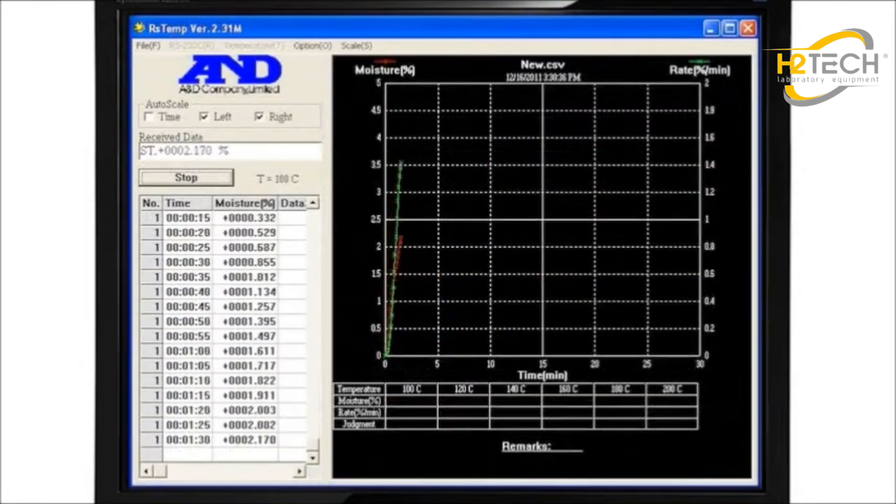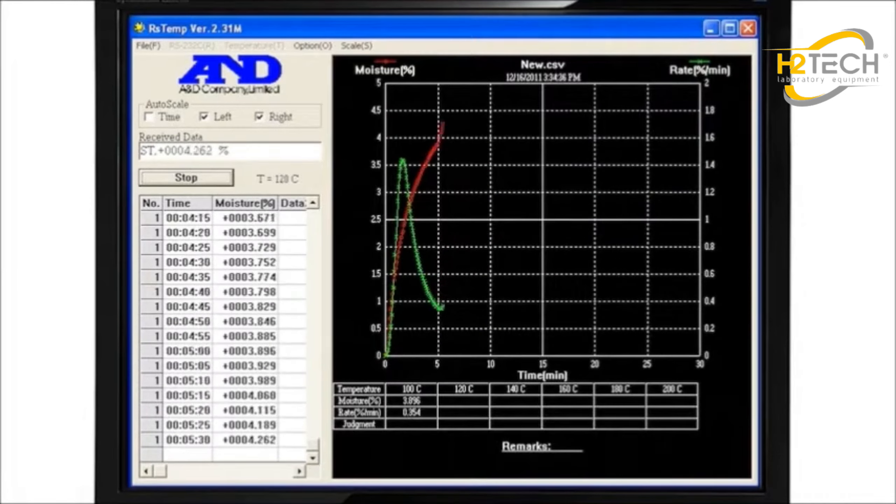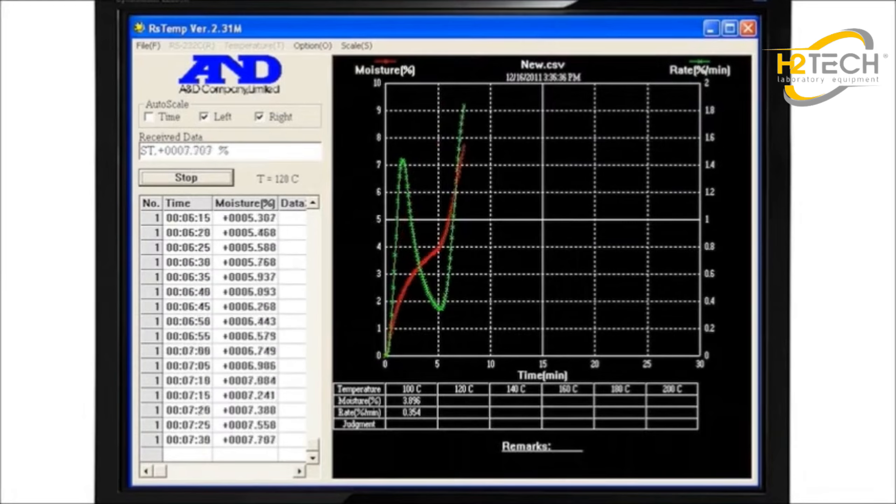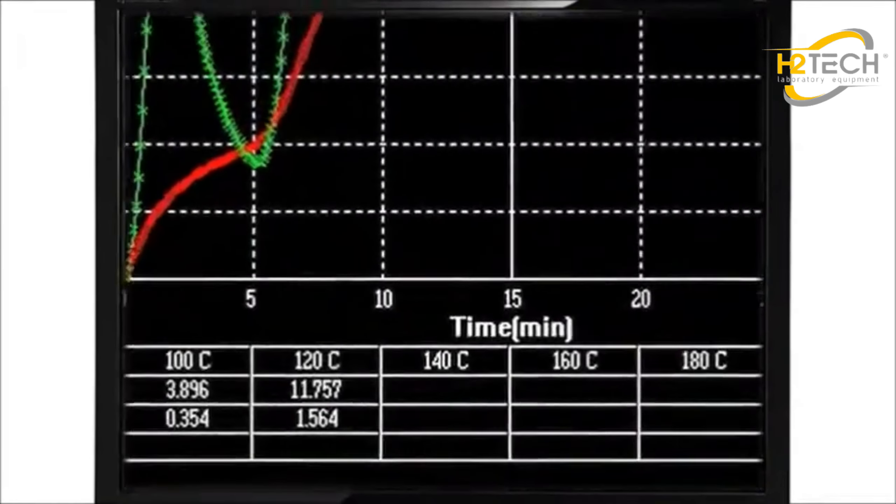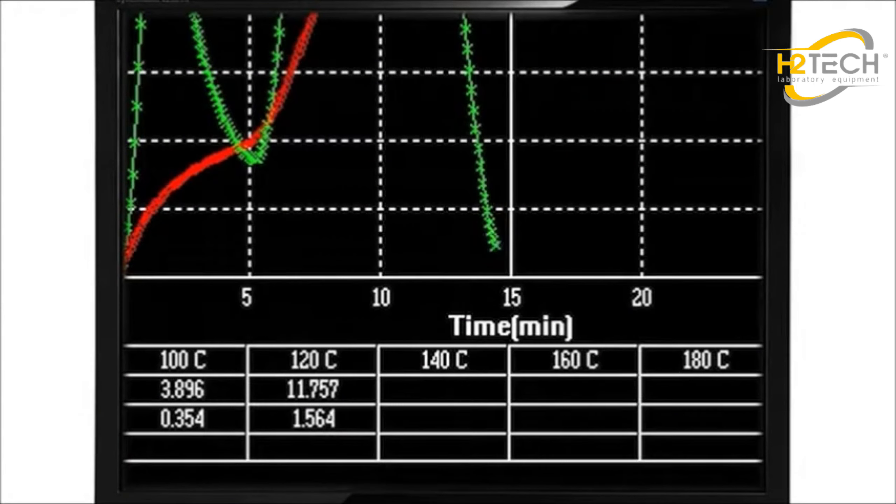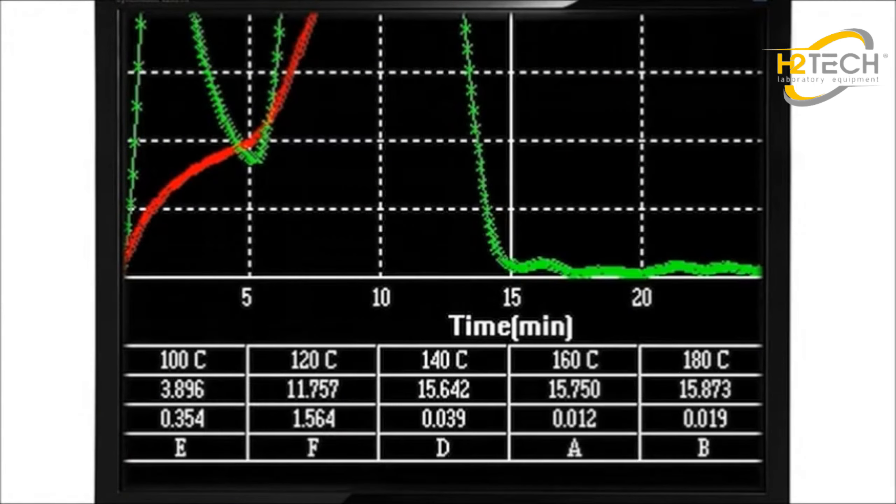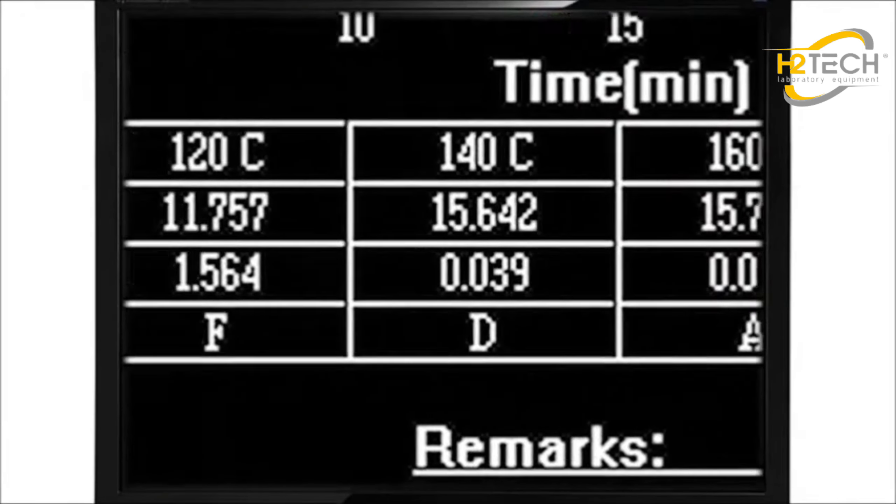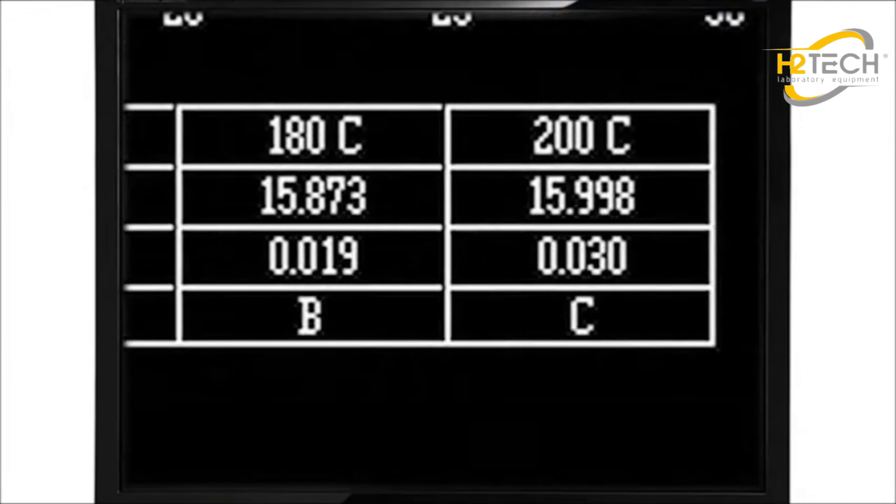Not sure at what temperature to process your sample? The RS-Temp function of WinCT automatically determines the most suitable conditions by changing the applied heat over any range from 30 to 200 degrees C. It outputs a letter grade indicating the optimum test temperature. You can then make this the basis for future tests of the same material.